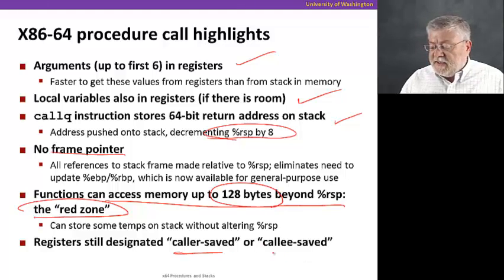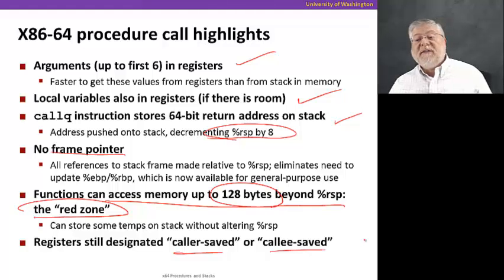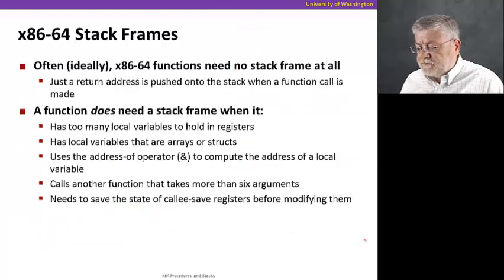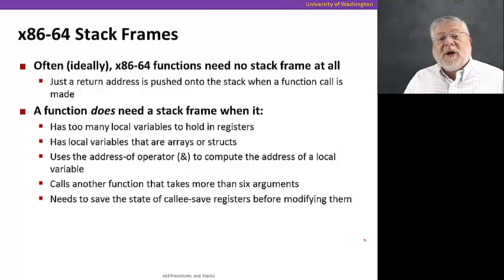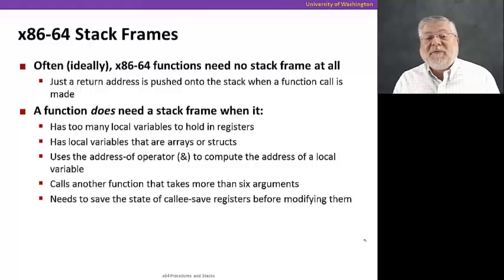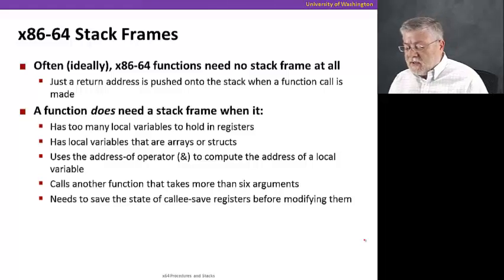Registers are still designated as caller saved or callee saved, however, but slightly differently than they were before. Ideally, the 64-bit architecture has no stack frame at all except for the return address. We've now shrunk the stack frame down to just one piece of information, namely that 8-byte return address that is placed on the stack. This makes things a lot simpler for manipulating the stack and making the frames that we need.